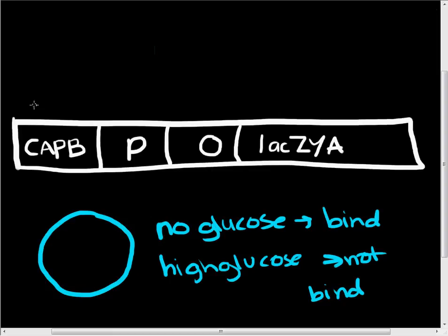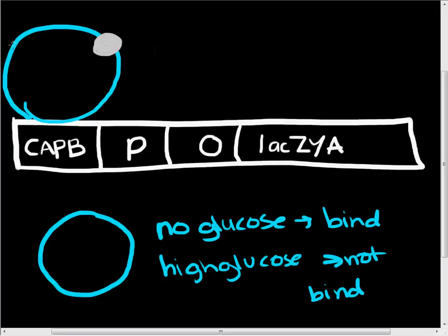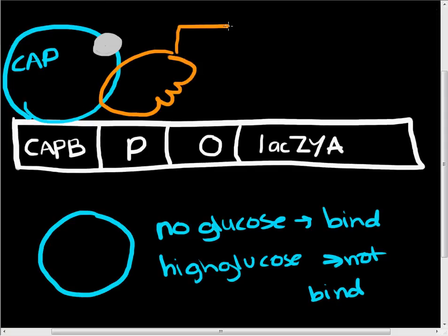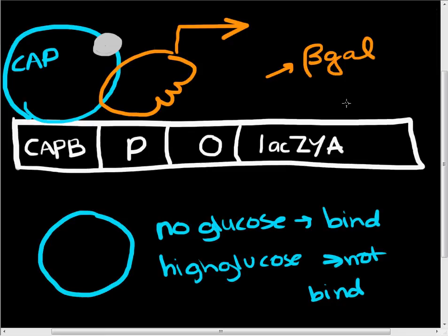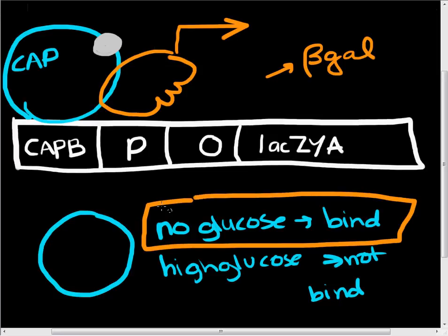Let's see what happens when CAP does bind under our low-glucose condition. In the low-glucose condition, we want the cell to be able to digest lactose if lactose is present. So with the CAP protein bound by cAMP, it will bind to the CAP binding site on the lac operon. When this happens, CAP recruits RNA polymerase to the promoter and helps initiate transcription, leading to production of beta-galactosidase. So in order to make beta-galactosidase, we must have low glucose levels so that the CAP protein can bind to the CAP binding site.